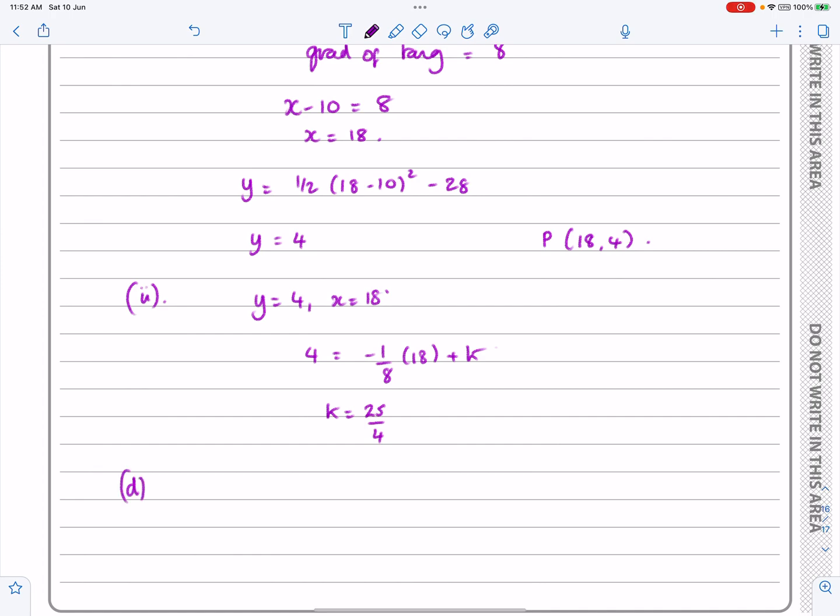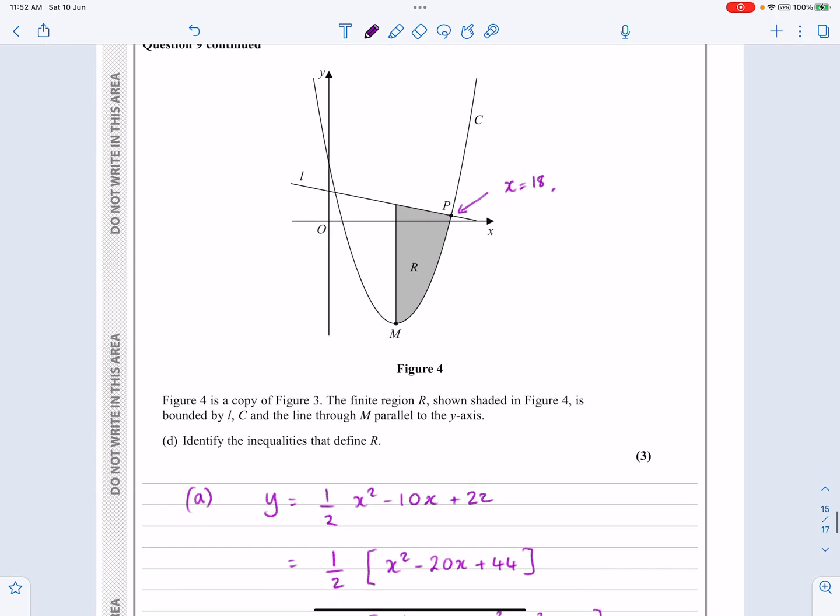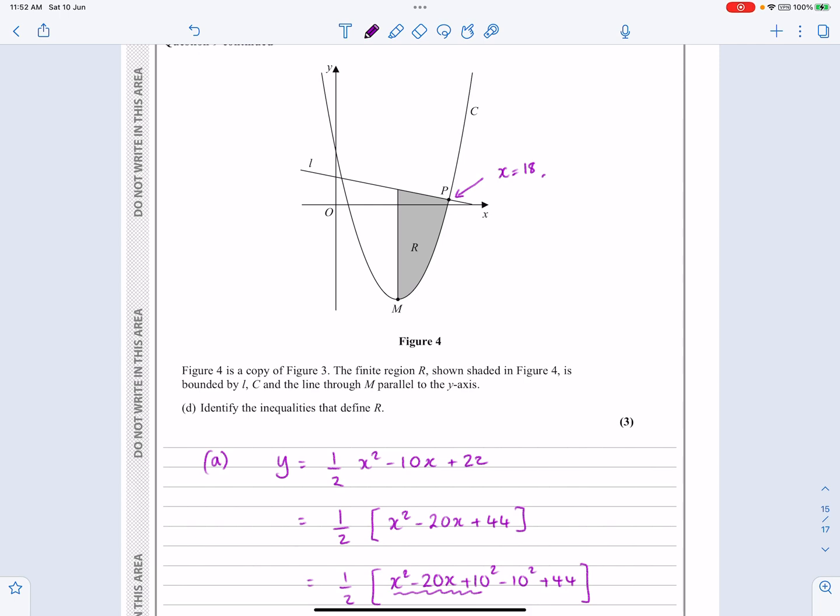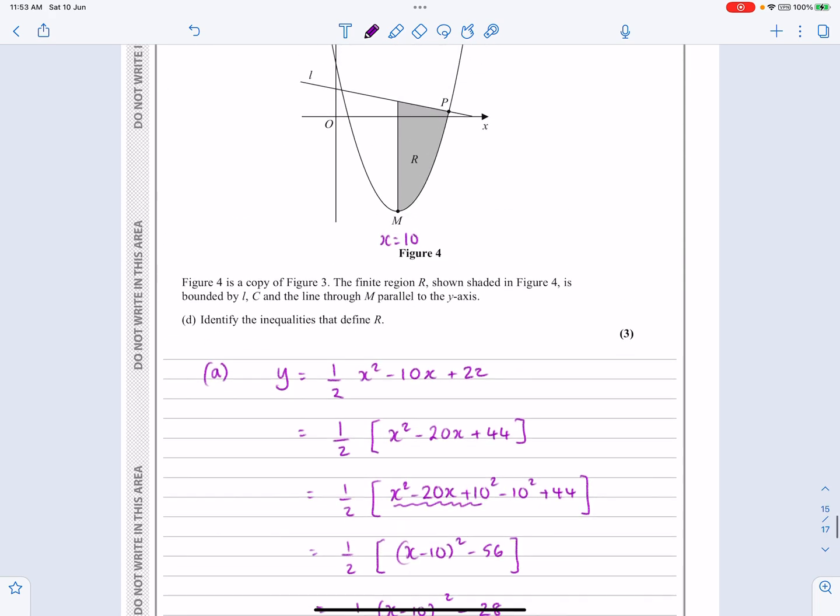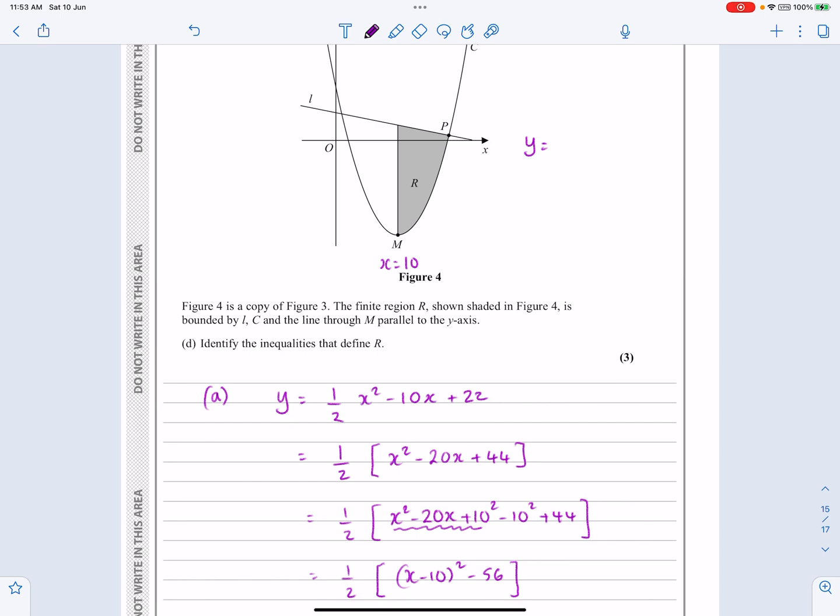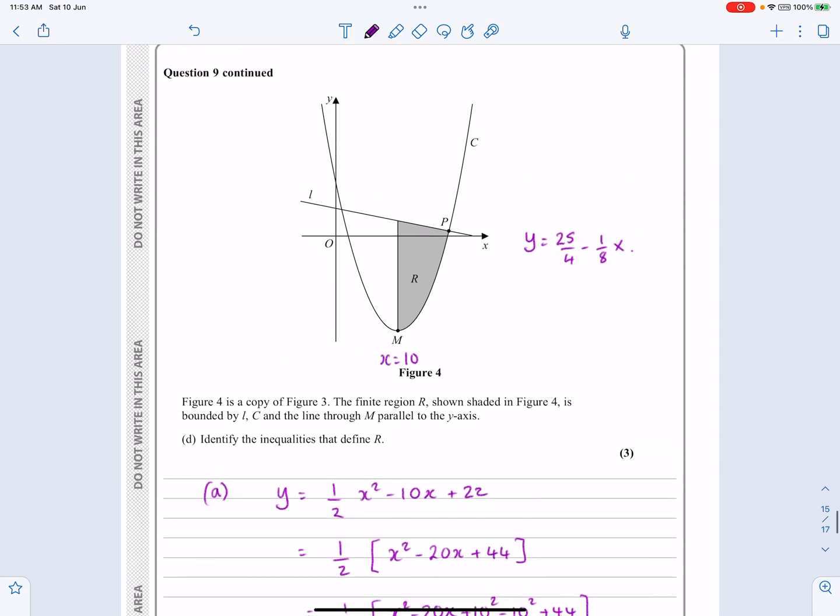And then for part D, let's go back and just look at this. Part D then is talking about this finite region R here and what that's going to be, what inequalities are going to define this. So remember, we had the M, had the gradient, sorry, had the x value, x equals 10. Remember, the equation of the line, I've forgotten it myself, was y equals k minus an eighth x. So is y equals 25 over 4 minus an eighth x. And then the curve we've got, we've got the curve as it is.